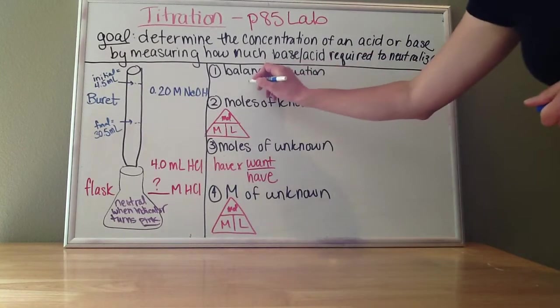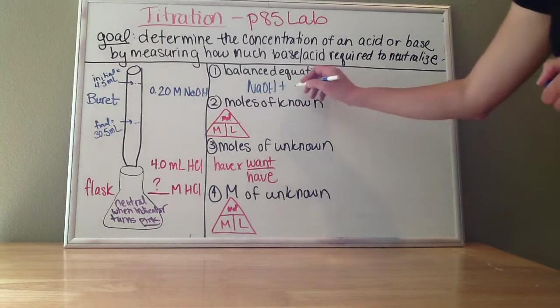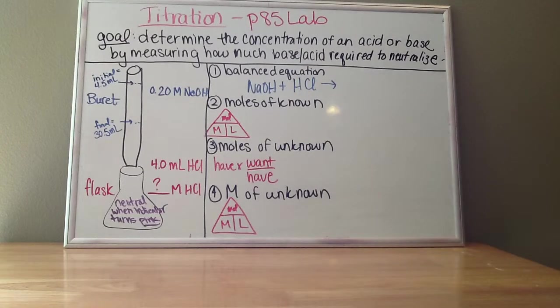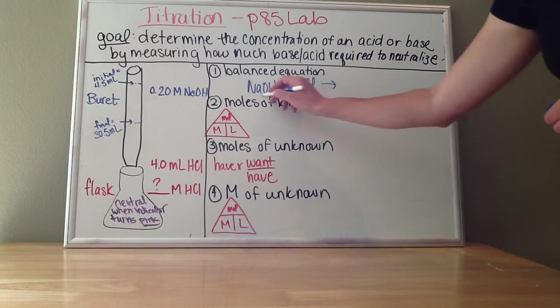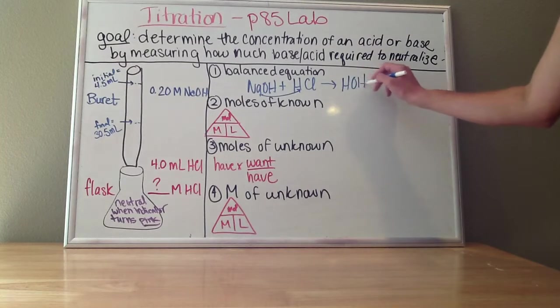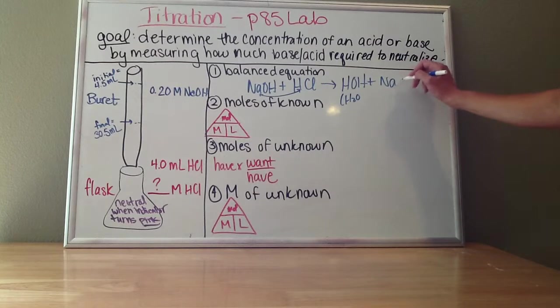So my acid is—sorry, my base is NaOH. My acid is HCl, and it's a double displacement reaction. So the H and the Na are going to switch places, leaving me with HOH, otherwise known as water, and NaCl.